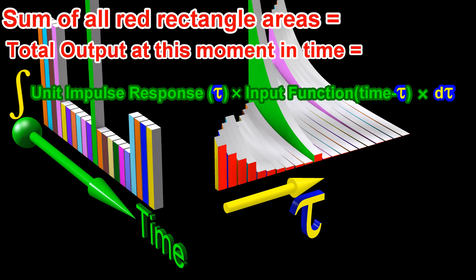Note that as d tau approaches zero, the area of each of the individual red rectangles approaches zero. Hence, the contribution of each of the individual output functions approaches zero. This is because each of the input impulses shown here only have a finite height, whereas a true unit impulse input function would have a height that approaches infinity. The equation shown here is what we refer to as convolution.